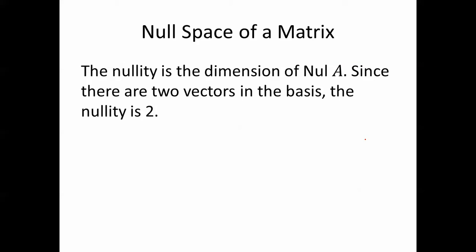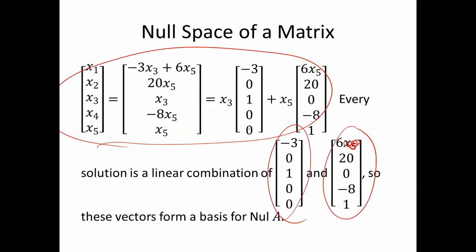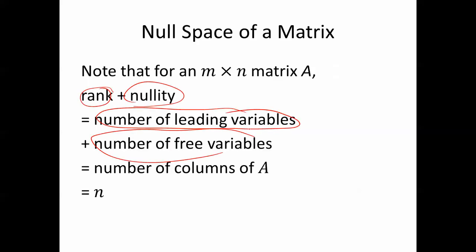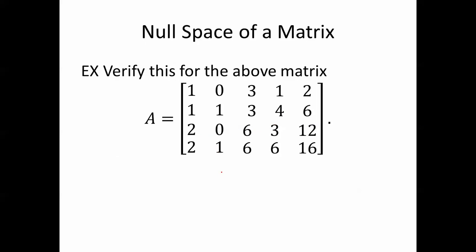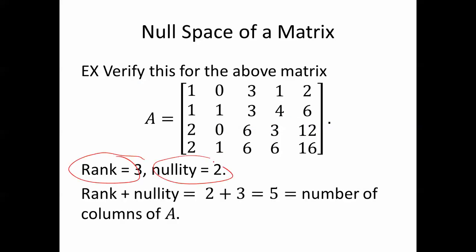The nullity is the dimension of the null space of A. Since there are two vectors in the basis, the nullity is 2. For an m by n matrix A, the rank plus the nullity equals n. The rank is the number of leading variables, and the nullity is the number of free variables — like x3 and x5 in this case. The number of leading variables plus the number of free variables equals the number of columns of A, which is n. We can verify: the rank was 3 and the nullity was 2, so rank plus nullity equals 5, which is also the number of columns of A.